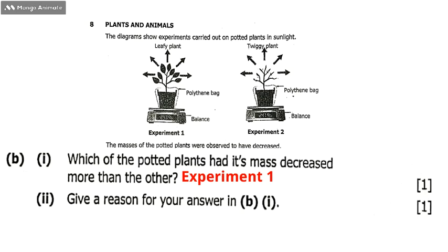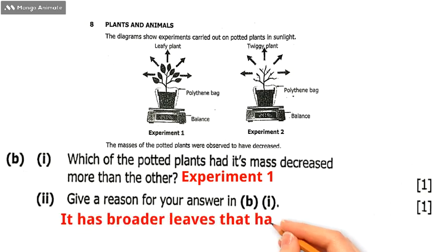We go to question number b(ii): give a reason for your answer. I have already mentioned my reasons. The reason is it has broader leaves that have a lot of stomata. We go to question number eight c.